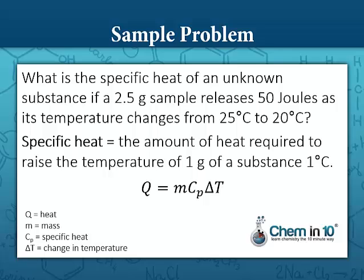Since this problem is asking for the specific heat Cp, we need to solve for that, and we're going to isolate that variable by dividing each side by mass times change in temperature. And we get the specific heat is equal to the heat divided by the mass times the change in temperature.